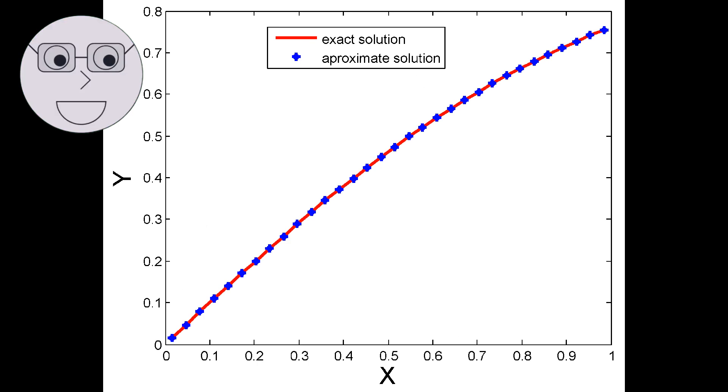The Haar Wavelet is the simplest wavelet and is used as a building block for other wavelets. It is a step function that alternates between minus 1 and 1.